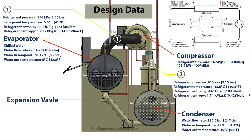Moving on to point two, located just after the compressor, we know the enthalpy is going to increase because it has moved along the axis, and entropy is going to increase as well since it's not a straight line. Temperature and pressure also increase. At point two, the pressure has increased from 356 to 915 kilopascals (9.15 bar), the temperature has increased from 5.5°C to 43.6°C (110.5°F), and both enthalpy and entropy have also increased.